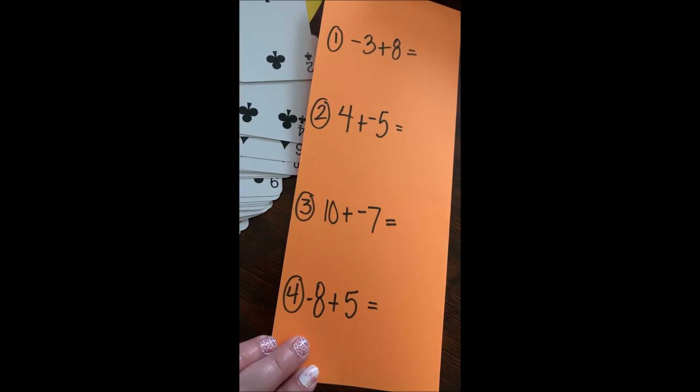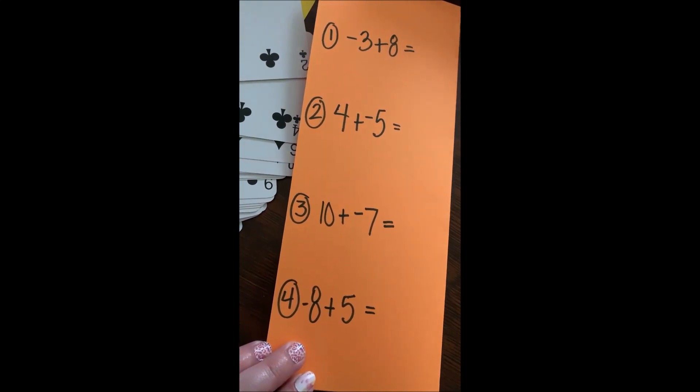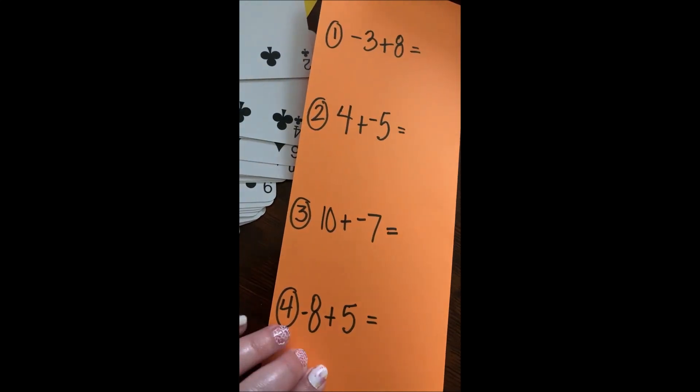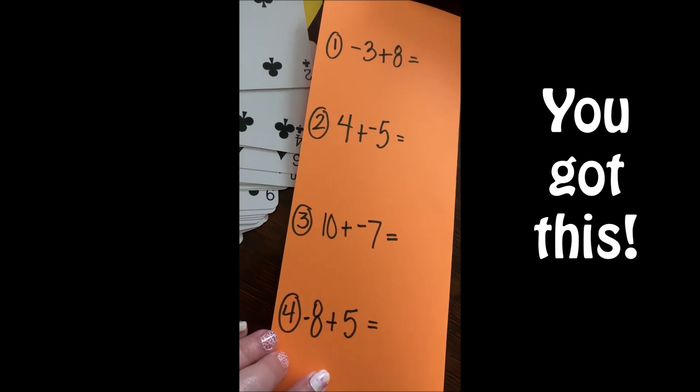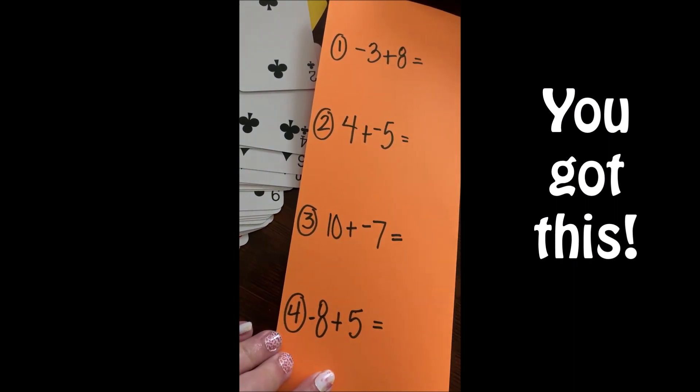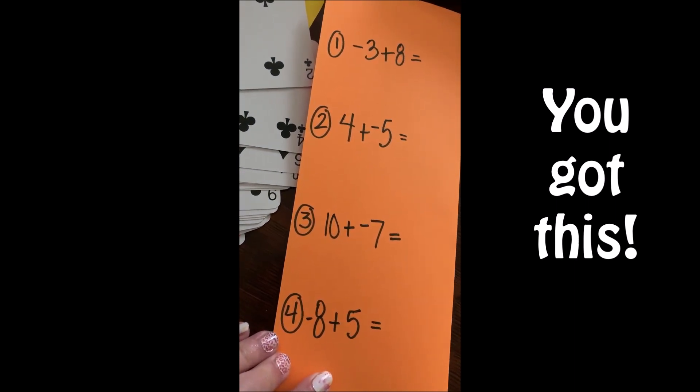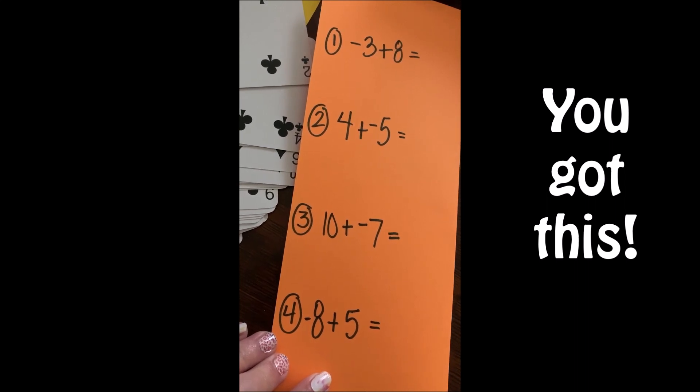Get out your cereal or your playing cards or your Skittles or your M&Ms, whatever you need to, and work out these four problems. Find your zero pairs. You got this.